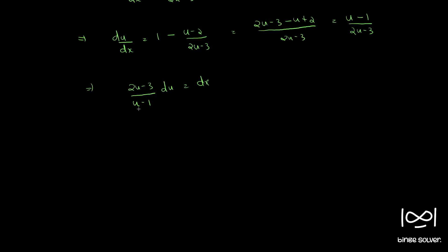This is not a proper fraction, so we convert it into a proper fraction so that we can easily integrate both sides. We write 2u minus 3 as 2 times u minus 1, which gives 2u minus 2, so we need minus 1 more to get 2u minus 3. So the numerator becomes 2u minus 2 minus 1, giving 2u minus 3. So, 2u minus 3 by u minus 1 du equal to dx.